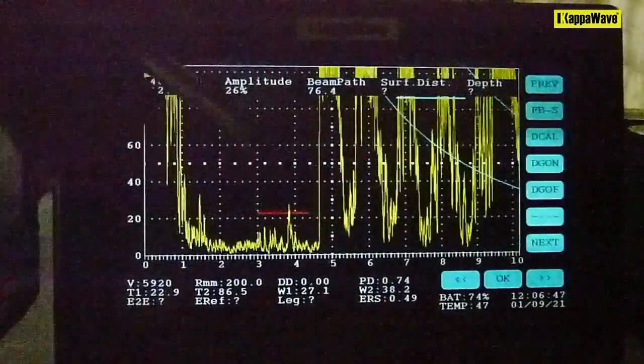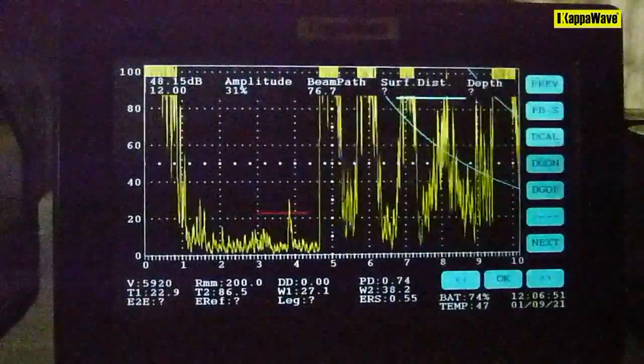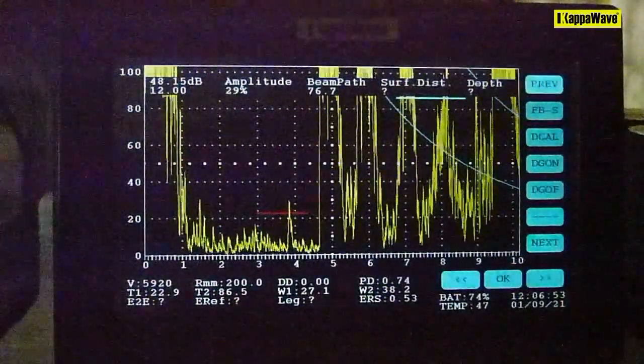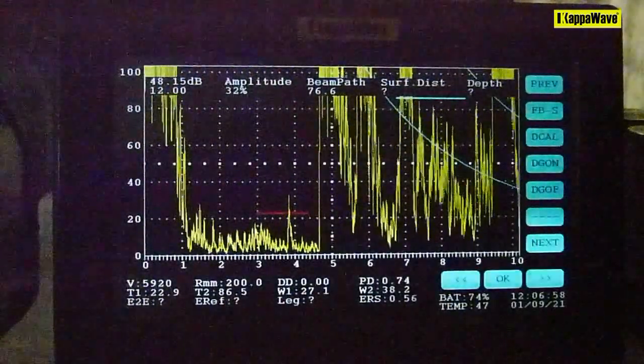And this is the much smaller one. I'm getting as 1.4. In this case it reads as 0.53 or 0.55. The actual dimension is 0.7.